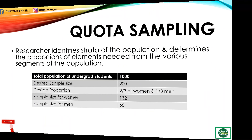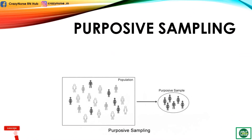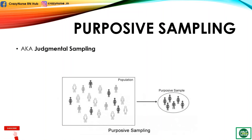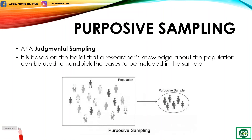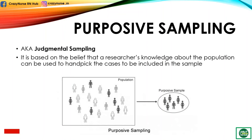Lastly, we have purposive sampling. It is also known as judgmental sampling, and it is based on the belief that a researcher's knowledge about the population can be used to handpick the cases to be included in the sample.